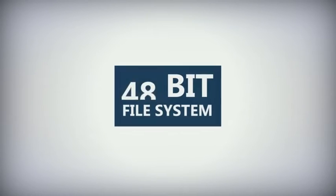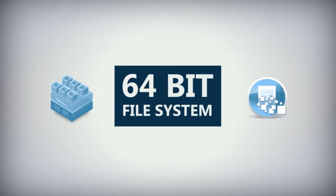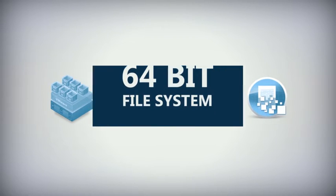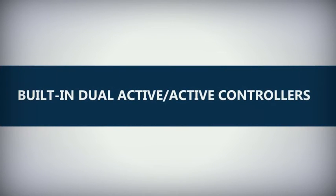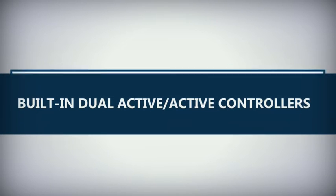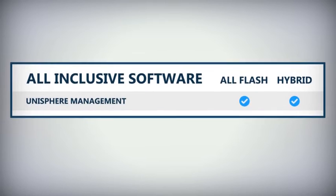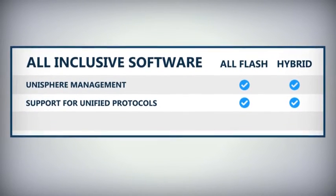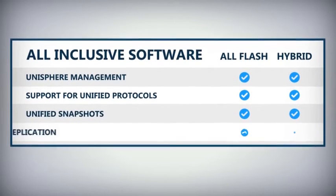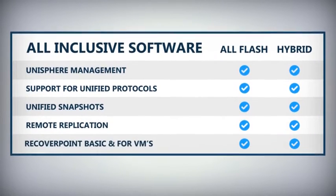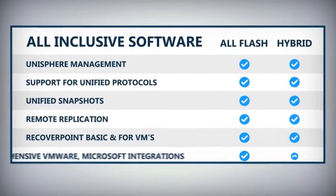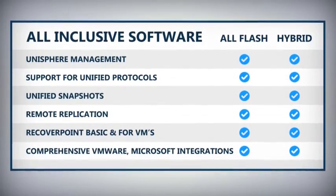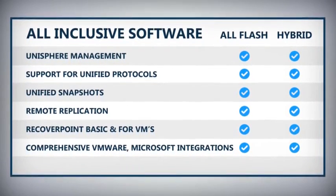A new scalable 64-bit file system brings many new virtualization and enterprise capabilities. Built-in dual active-active controllers ensure application availability. All-inclusive software includes Unisphere Management and support for unified protocols including file, block, and vVols. Unified snapshots, remote replication, RecoverPoint Basic and for VMs are included, along with comprehensive VMware and Microsoft integrations like VASA, VAAI, and MMC.